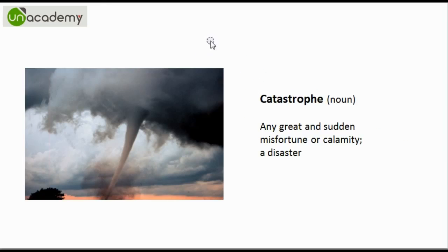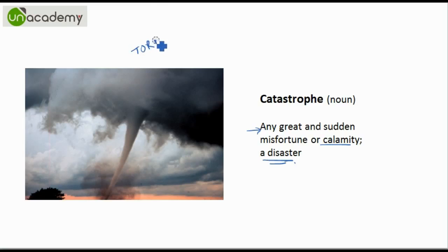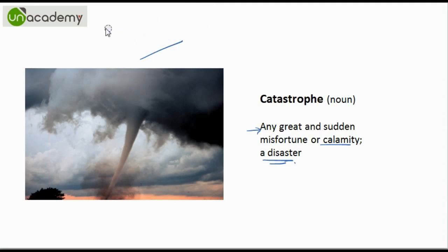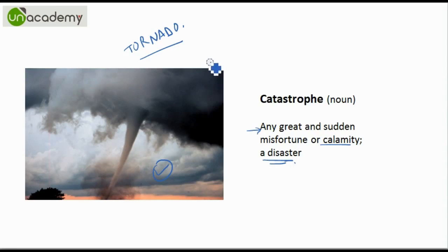Next we have Catastrophe. Catastrophe means any great and sudden misfortune, calamity, or disaster. As you can see, a tornado can be a catastrophe. So this tornado can help you relate to and remember the word Catastrophe.